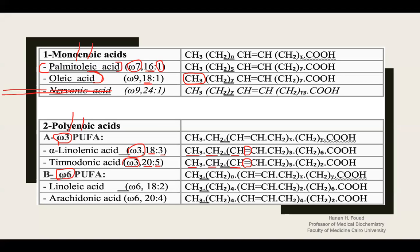They are found in cod liver oil and fish. The two examples of omega-3 are alpha-linolenic and timnodonic. Alpha-linolenic is omega-3, meaning the double bond is between carbon 3 and 4. Alpha-linolenic has 18 carbons and three double bonds; timnodonic has 20 carbons and five double bonds.